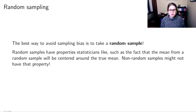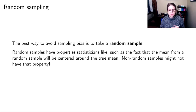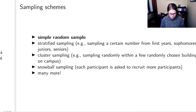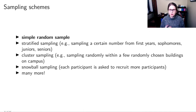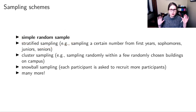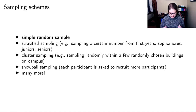The best way to avoid sampling bias is to take a random sample. Statisticians love random samples because they have nice properties — like the mean of a random sample is centered around the true mean, which a non-random sample probably wouldn't have. The sampling scheme we're going to focus on in this class is the simple random sample, as if you put everyone's names in a hat and drew them out randomly.